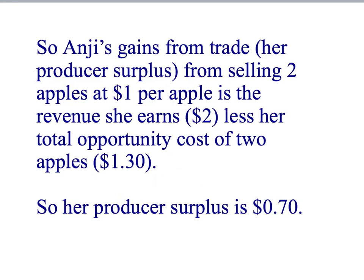That red area is exactly equal to $0.70. Notice that what we've done to get Anji's producer surplus is look at the area under the price she receives for apples above her marginal cost curve. So the area under the price above marginal cost, up to the quantity of apples that Anji sells, gives a measure of her gains from trade or her producer surplus. In summary, we've worked out Anji's producer surplus of $0.70 when she sells two apples at $1 per apple — numerically, that's $2 revenue minus $1.30 total opportunity cost, shown both numerically and on the diagram.